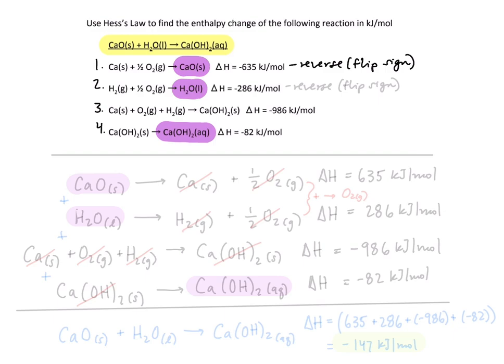The same is true for reaction two. We also need to reverse this reaction to get water on the reactant side and that means we will also flip the sign. So instead of having negative 286 kilojoules per mole it will be positive and that's the same for reaction one.